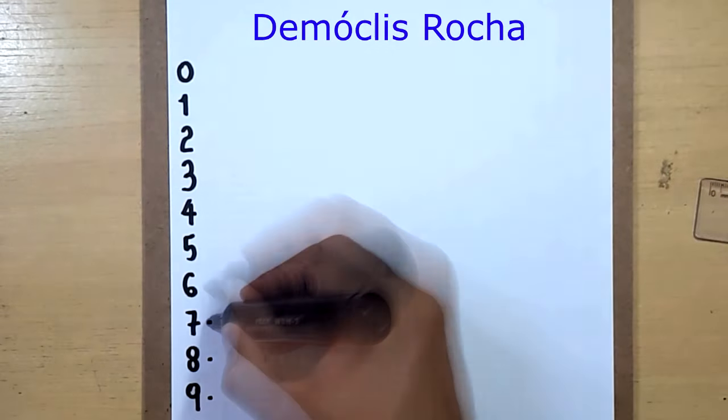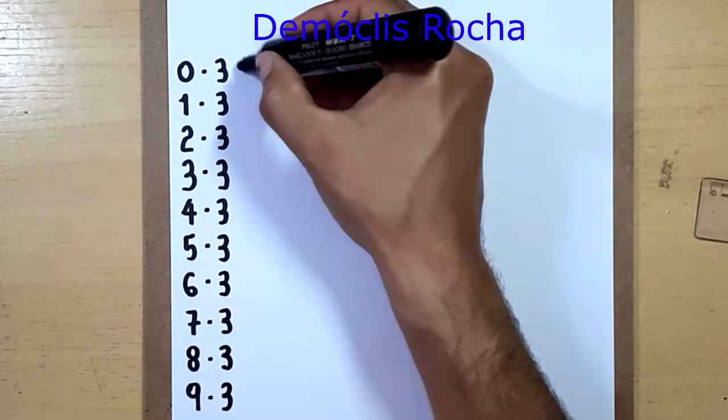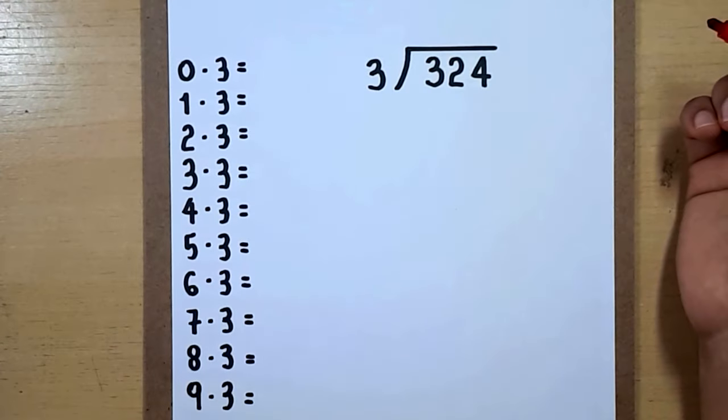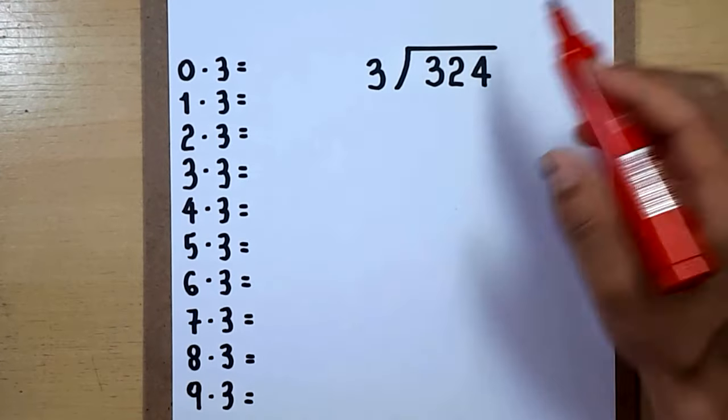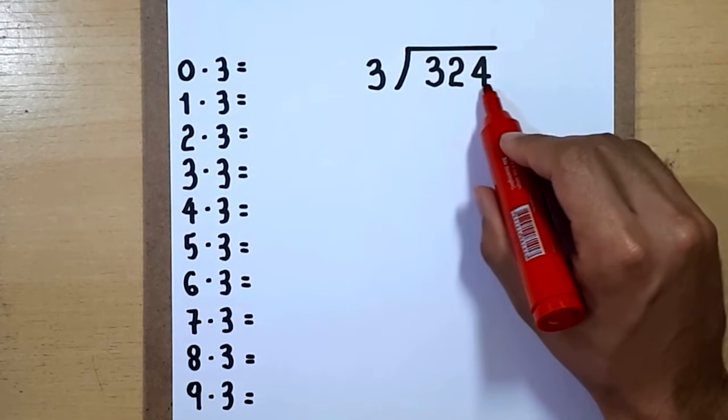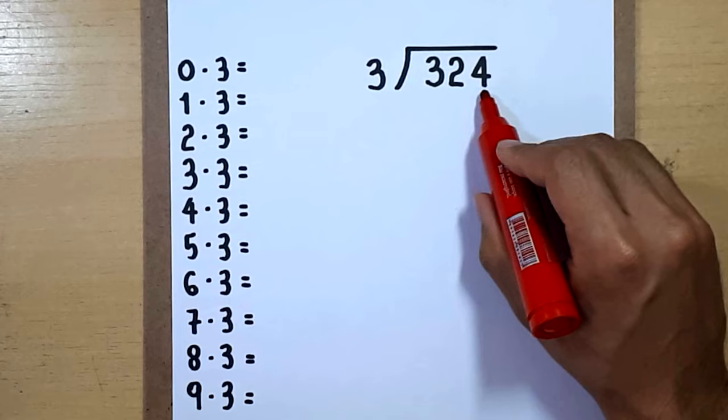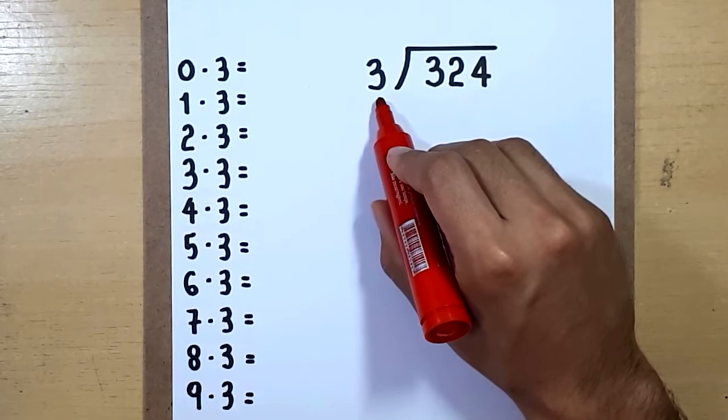Hello my YouTube friends, this is Democles Rocha. In this video I will present to you a division: 324 divided by 3. 324 is our dividend, the value we will divide in three equal parts.